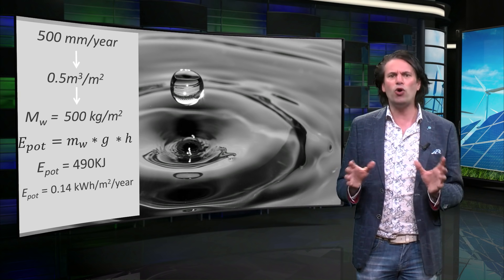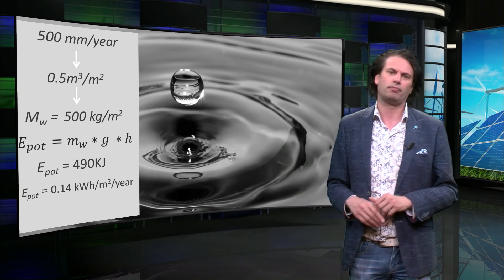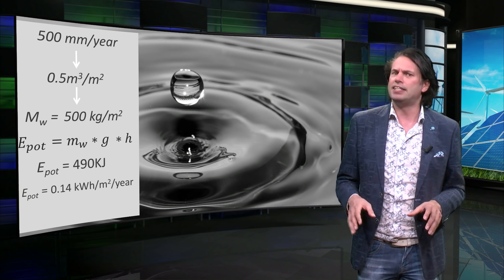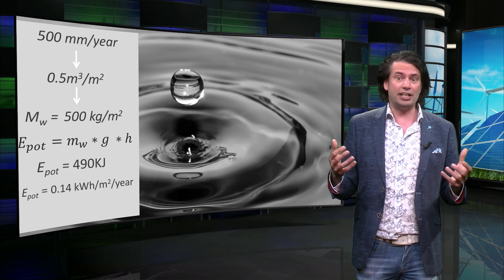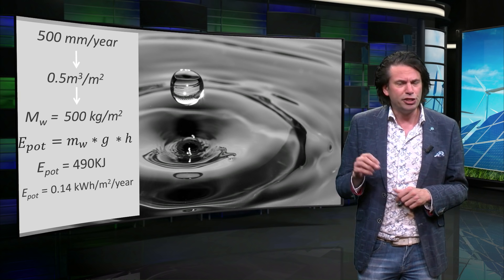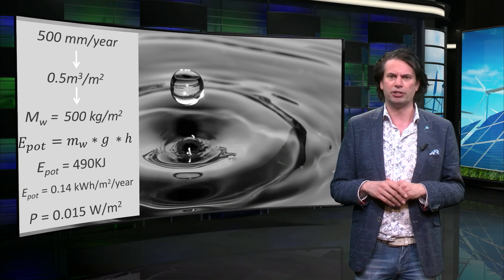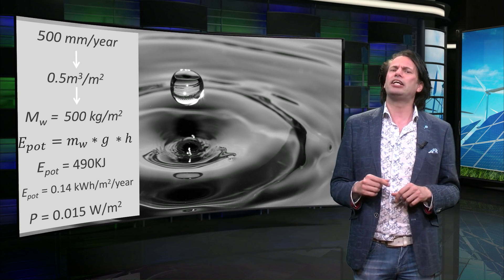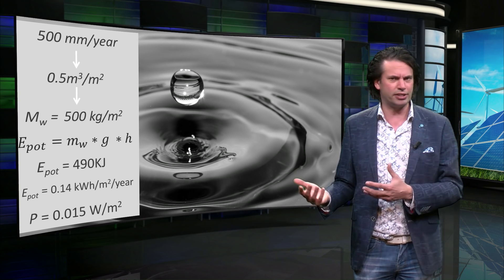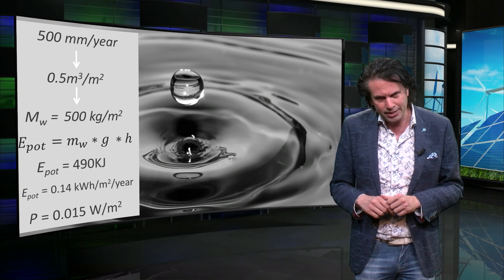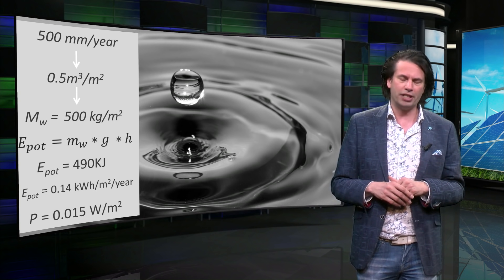So now we know the energy density in terms of kWh per square meter per year. We can express this in power per area by dividing by the total seconds in a year to get 0.015 watts per square meter. However, this calculation assumes that all potential energy is converted into electricity. In reality this is not the case, and it is dependent on the landscape surrounding the dam.